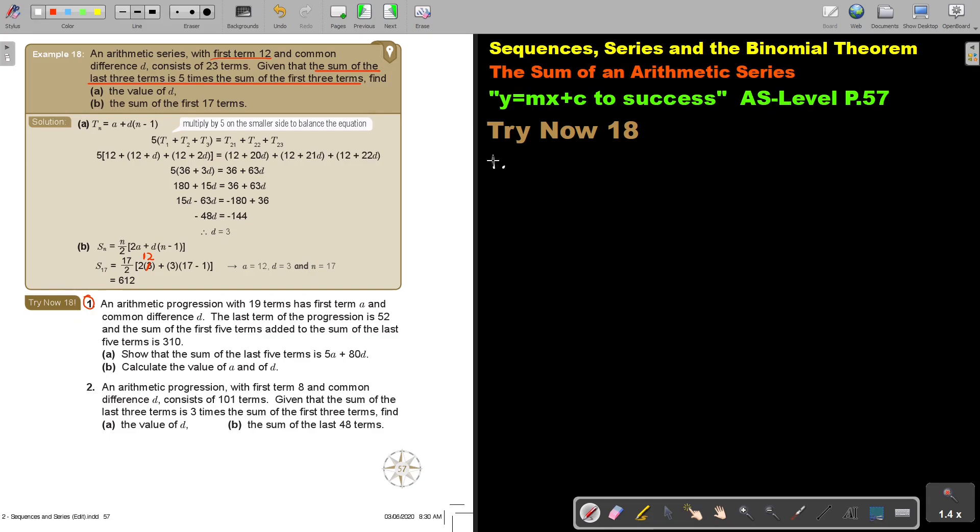Let's start with number 1. An arithmetic progression with 19 terms has first term A and common difference D. The last term of the progression, this is very important, is 52. And the sum of the first 5 terms added, this is very important, to the sum of the last 5 terms is 310.